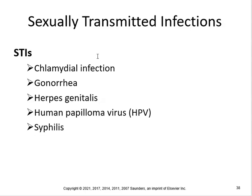Sexually transmitted diseases or infections include chlamydia, gonorrhea, herpes, HPV, and syphilis. Some of these are bacterial — like chlamydia and gonorrhea — which can be treated with antibiotics. Others are viral, like herpes and HPV, which are harder to treat.